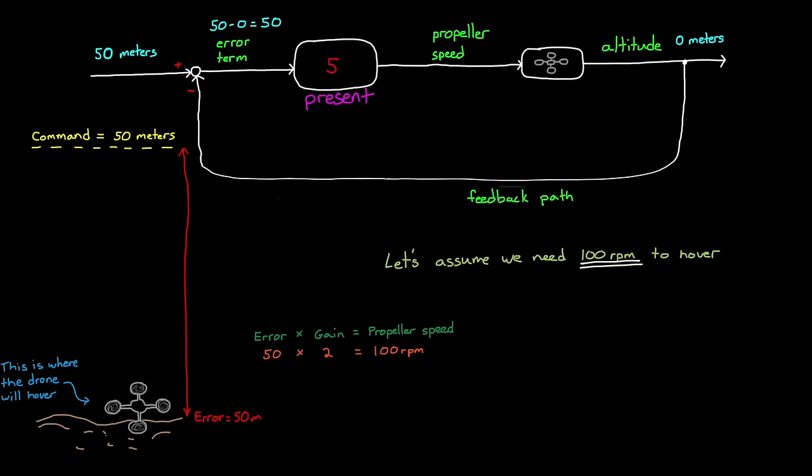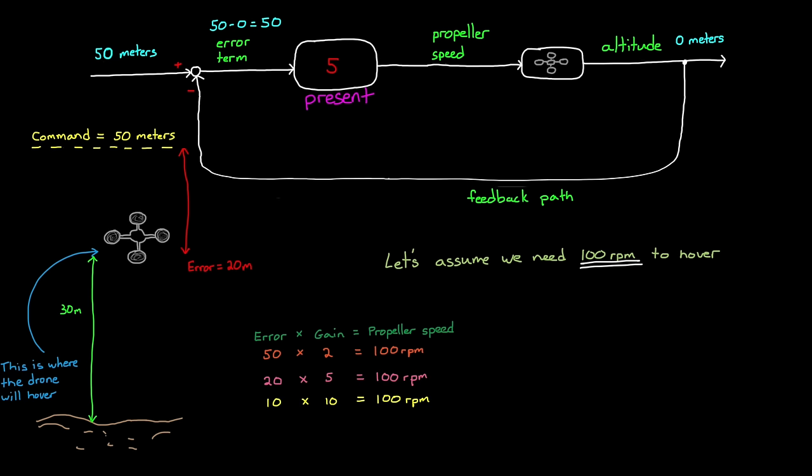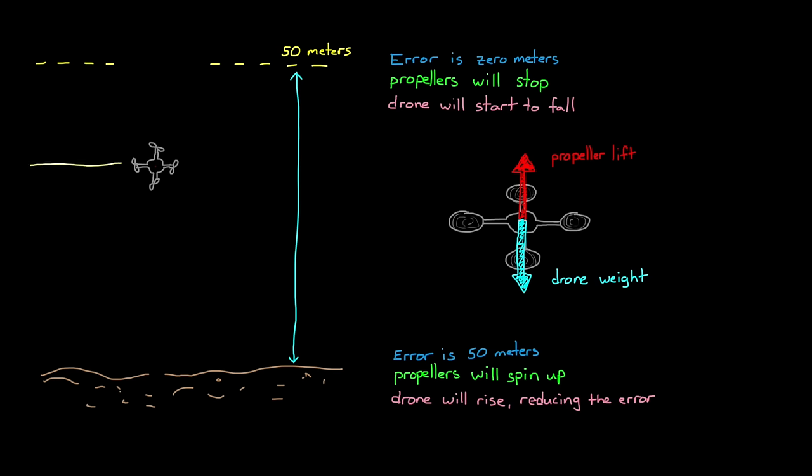However, if we increased the gain to 5, the drone would rise at first, but then stop at 30 meters, since the error at that point would be 20 meters, and 20 times 5 is 100 RPM. A gain of 10 would produce an error of 10 meters, and a gain of 100 would produce an error of 1 meter. And no matter how high we increase the gain, the error won't go away. It'll just get smaller and smaller with this system and a proportional controller. So we can see that a simple proportional controller doesn't work in every situation. It works with our walking example, but for our drone it created this constant error. This error is also called steady state error.